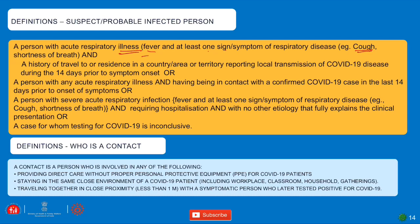A suspect includes: a person with fever and cough or shortness of breath; a history of travel to an area reporting local transmission of COVID-19 in the 14 days prior to symptom onset; or a person with any acute respiratory illness who has been in contact with a confirmed COVID-19 case in the last 14 days.